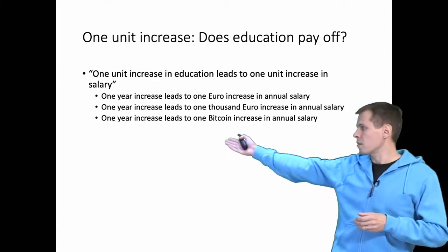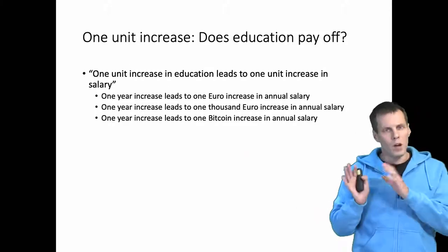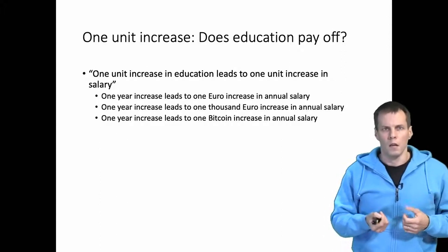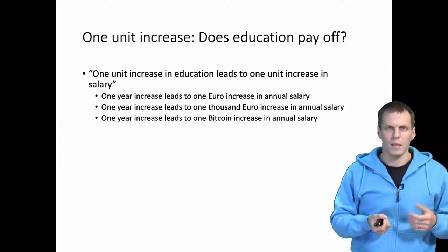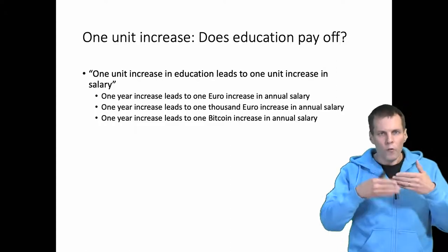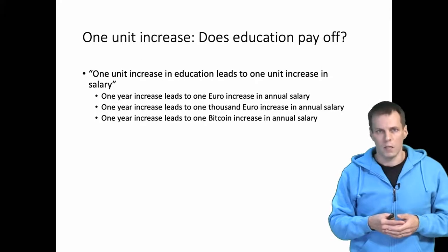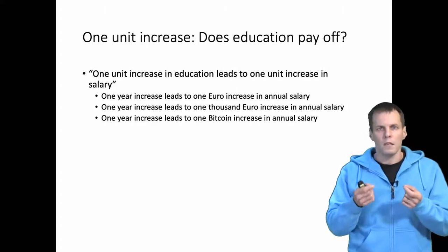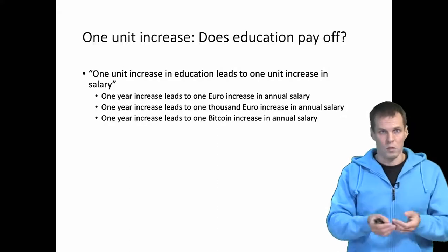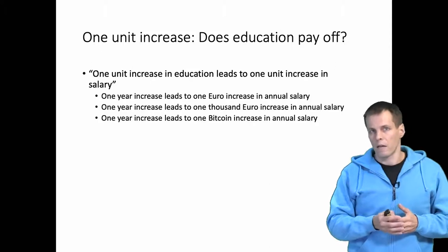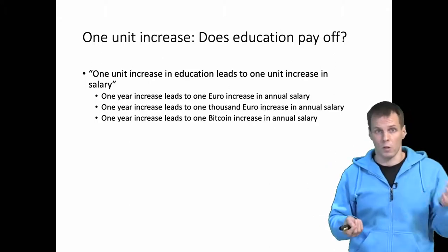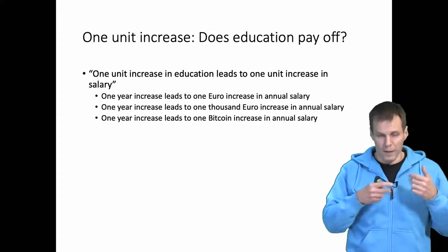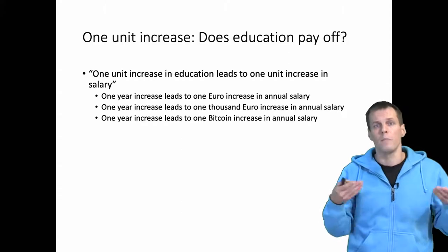What if the increase is one bitcoin in annual salary? The problem is that bitcoin doesn't have a readily intuitive value — you'd have to convert it to euros for it to make sense. Similarly, if someone tells me the temperature is 80 Fahrenheit, I need to convert it to centigrade. If an American is told it's 20 centigrade, they convert to Fahrenheit. So conversions can make units easier to understand when you encounter an unfamiliar scale.